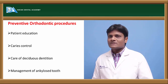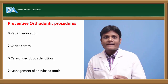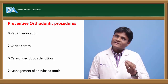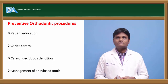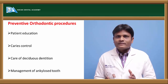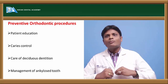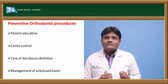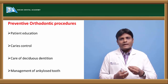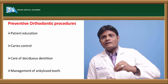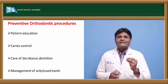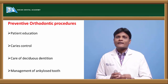The next important procedure under preventive orthodontics is management of ankylosed teeth. For example, if a deciduous first molar or deciduous second molar is ankylosed, the roots of these ankylosed molars will not resorb. The deciduous molar will stay in place for a prolonged period, preventing the eruption of the underlying premolars. If the deciduous tooth is ankylosed, the premolars may take an alternate path of eruption and erupt either buccally or lingually, leading to ectopic eruption of premolars.